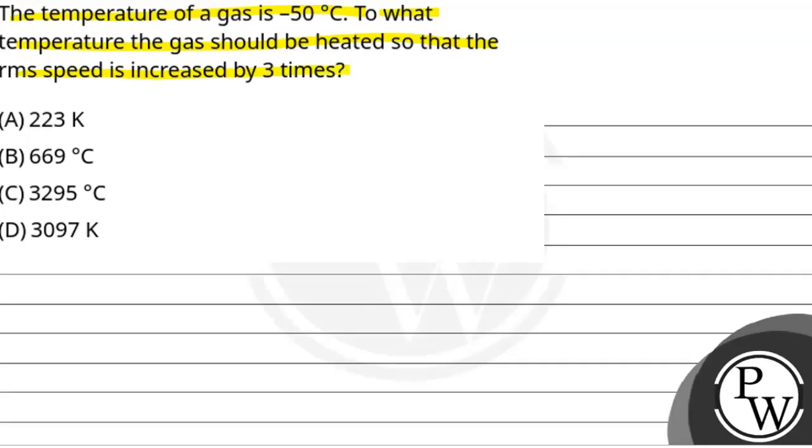Question में ये कहा गया है कि gas का temperature minus 50 degree Celsius है. गैस का temperature इतना बढ़ाना चाहिए, जिससे RMS root mean square speed 3 times increase हो जाए.